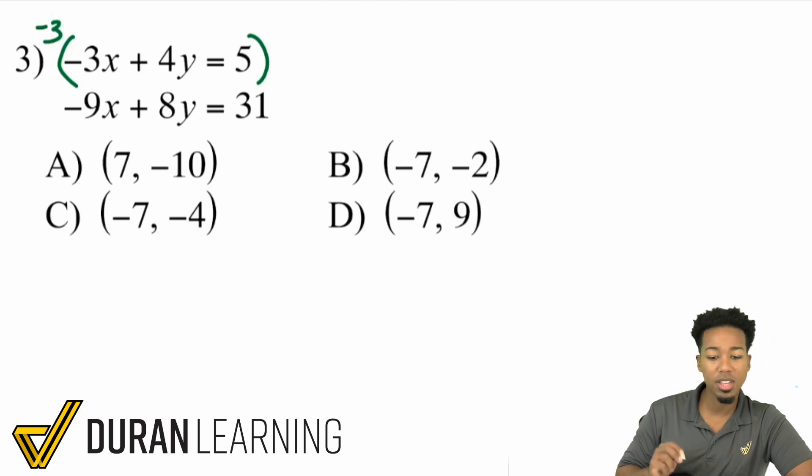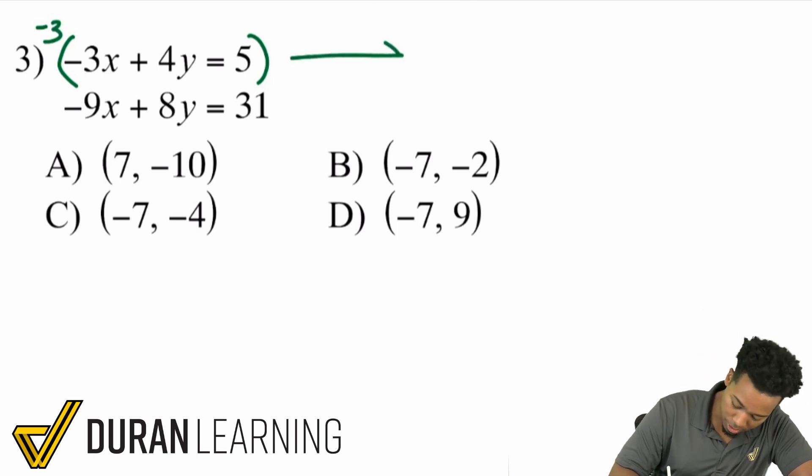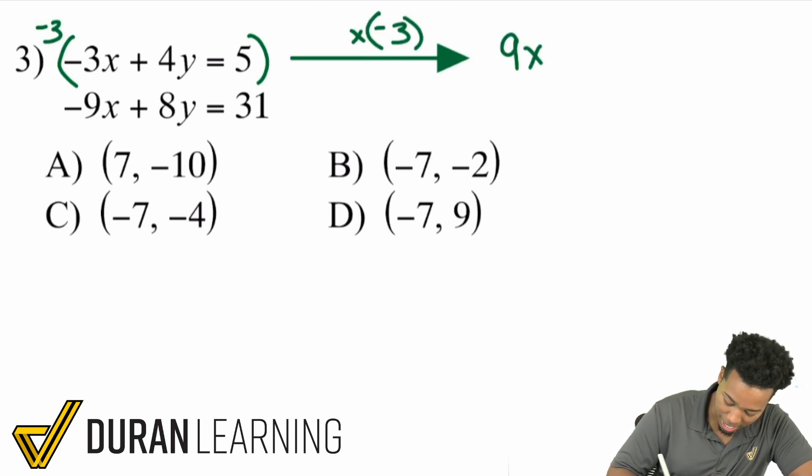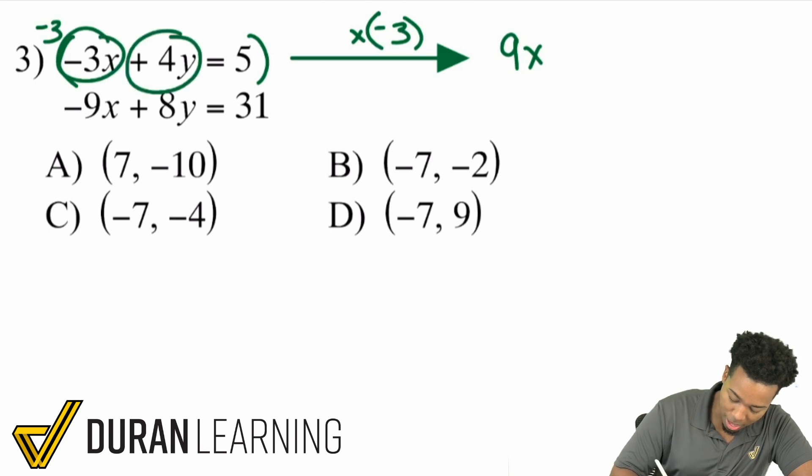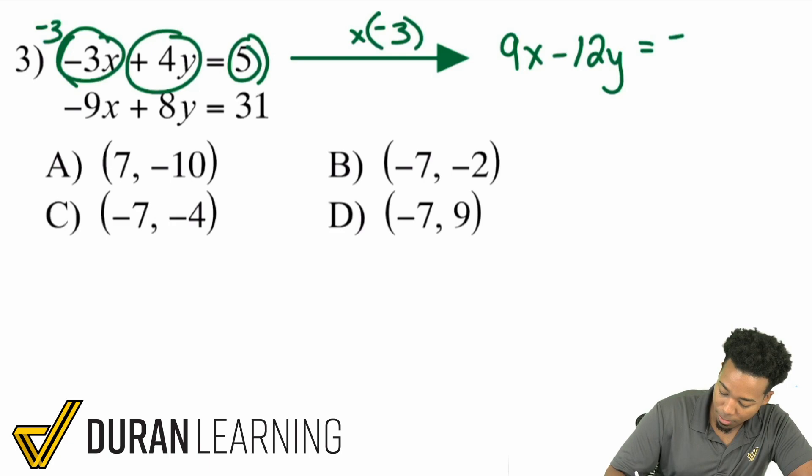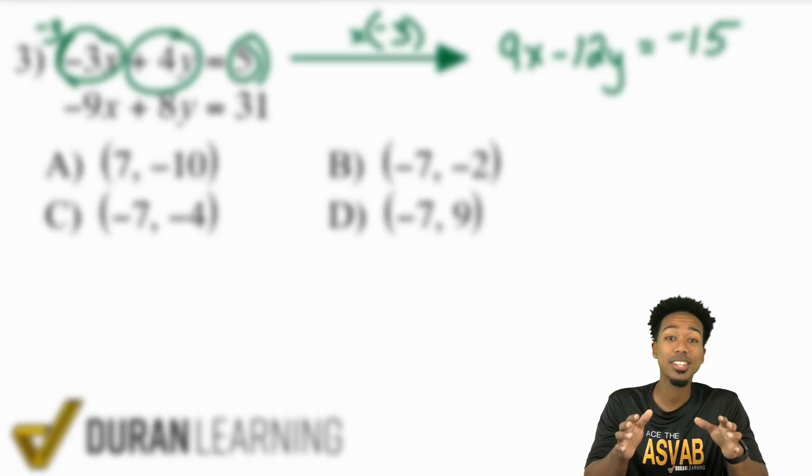I'm going to multiply this entire first equation here by negative 3. So if I do that, times negative 3, I'm going to have myself a positive 9x, multiply that by negative 3, minus 12y, multiply 5 by negative 3, negative 15. And really quick, before we continue my math party people,